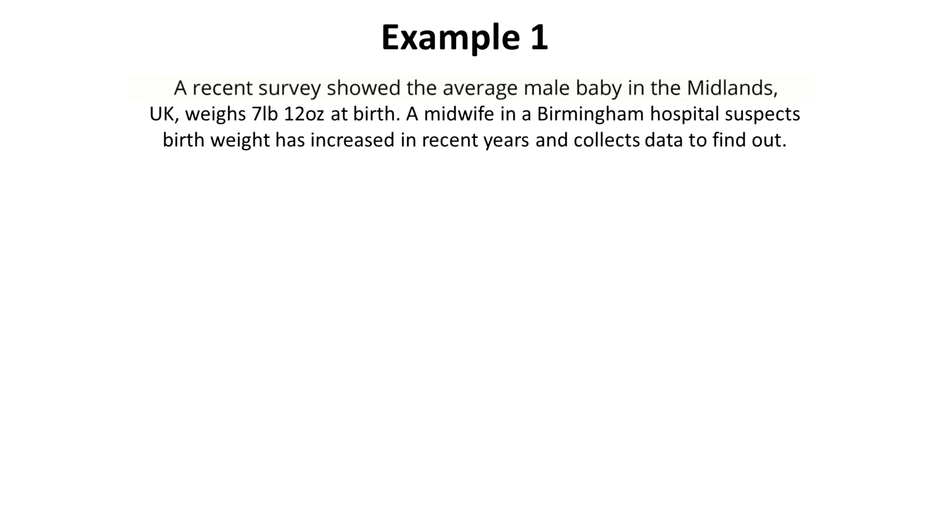In this example, we have a survey which showed that the average male baby in the UK weighs seven pound twelve ounces at birth. But a midwife in a Birmingham hospital suspects that the birth weight may have increased in recent years, and collects some data to find out. As we said before, the null hypothesis is what you would expect to see. So based on the survey, we would expect that the average birth weight in the population, the mean mu, is equal to seven pound twelve. So that defines your null hypothesis.